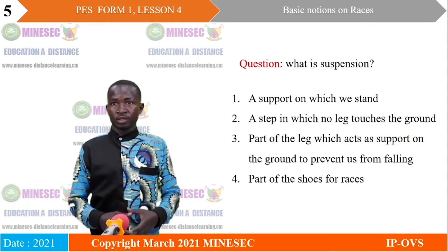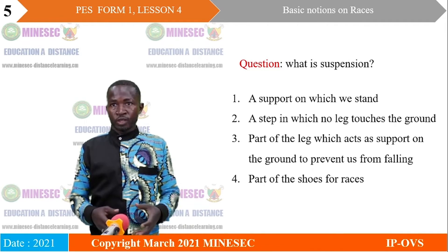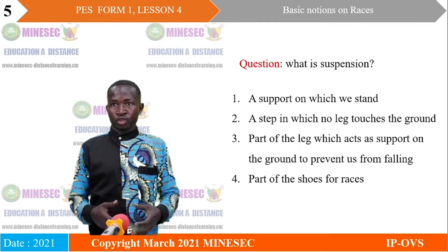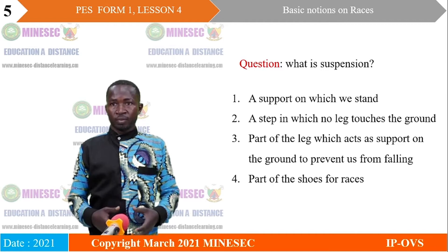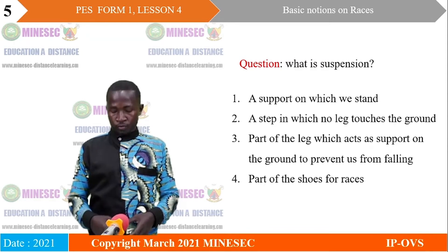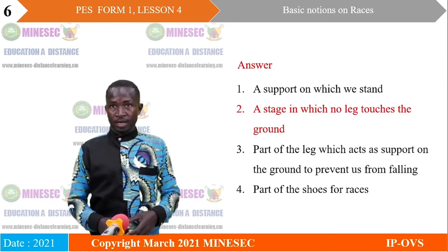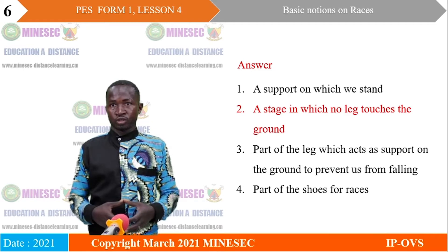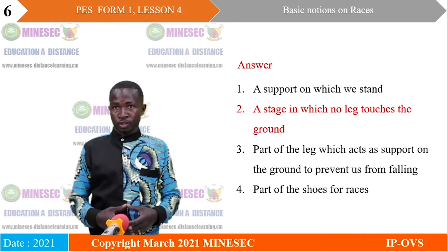The next question: what is suspension? Proposed answers were: a support on which we stand; a step in which no leg touches the ground; part of the leg which acts as support on the ground to prevent us from falling; and part of the shoes for races. The correct answer is: a stage in which no leg touches the ground. That is what suspension is.